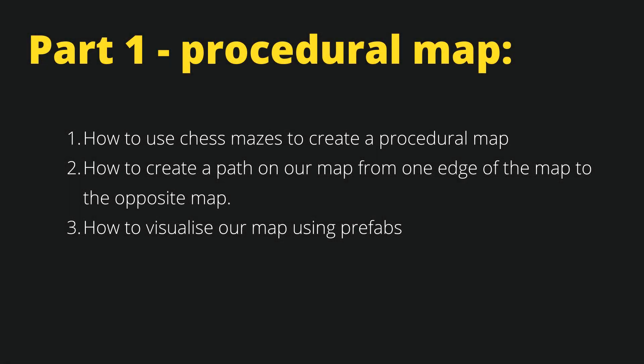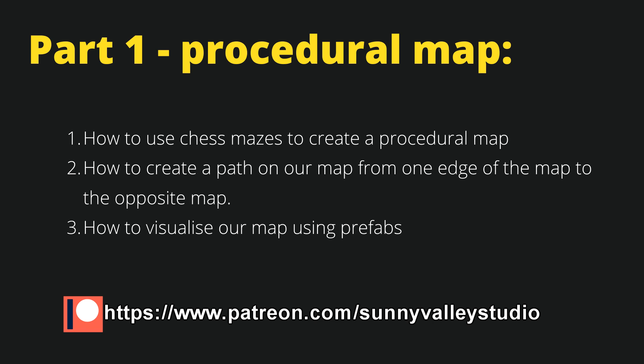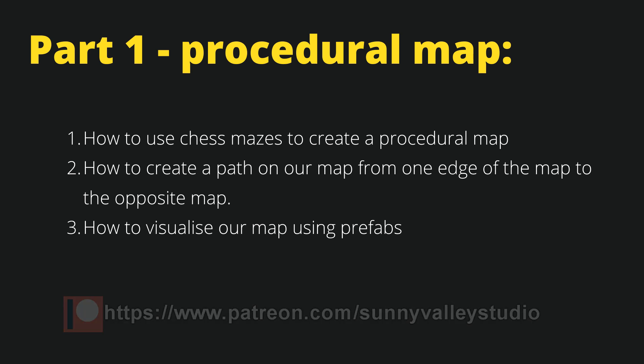First, we will consider how we can create our procedurally generated map for a game such as Tower Defense. So we will decide what we want to achieve and what the constraints are. Next, I will explain what chess mazes are and how we can use them in our procedural generation. And lastly, we will implement our procedural generation into Unity.